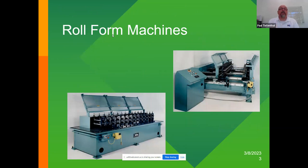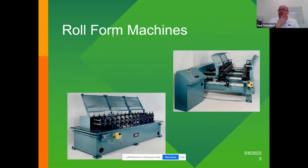The first thing we're going to talk about is different types of roll form machines you'll see out there. Most of the equipment I'll be talking about here will be geared more towards production-style equipment — not machines geared towards rolling up to a job site and rolling gutter, soffit, or fascia on the job site. These are for production facilities making large volumes of product.